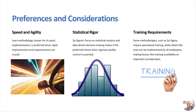Training requirements are also important — some methodologies such as Six Sigma require specialized training like Green Belt and Black Belt certifications, while others like lean can be implemented by all employees. Training availability is therefore an important consideration when selecting the right methodology for your process.